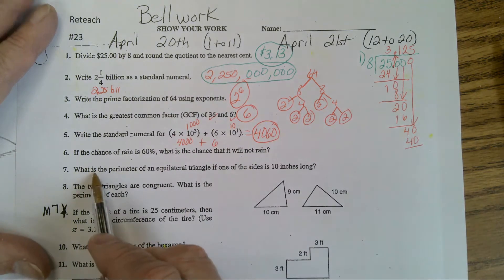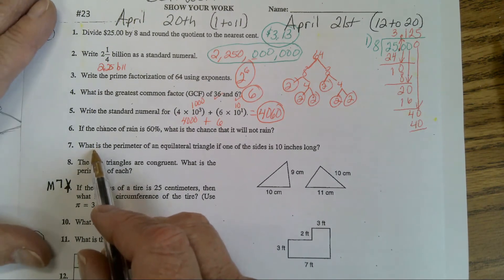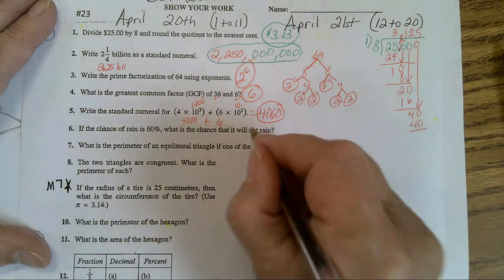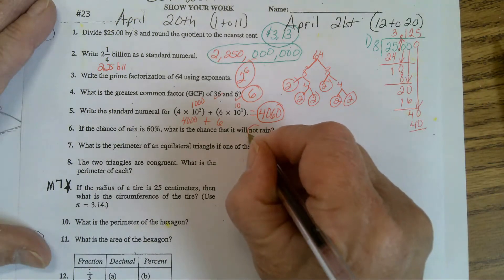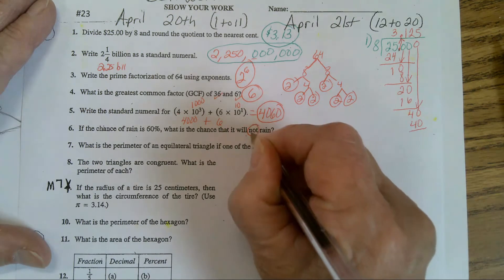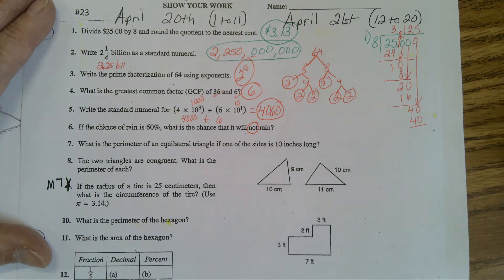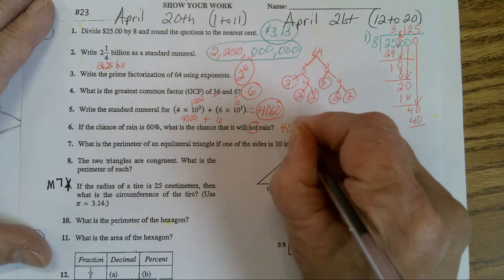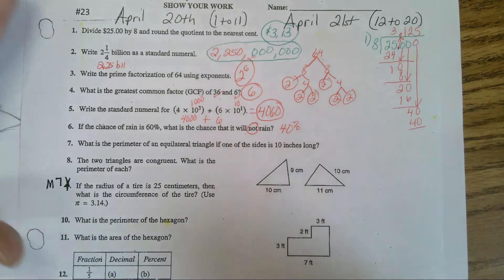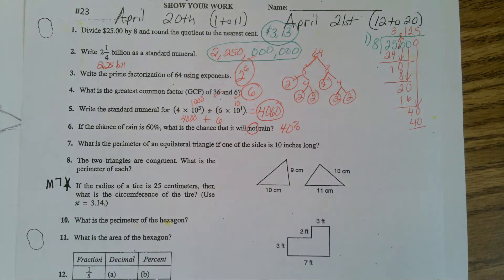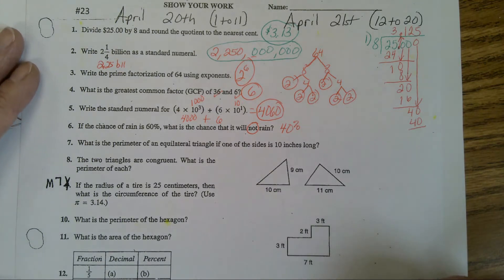If the chance of rain is 60%, what is the chance it will not rain? If this were a question and you could highlight, you would highlight the word not rain. What's the percentage that it's not going to rain? 40%, very good, because 40% plus 60 is 100. That's called its complement.